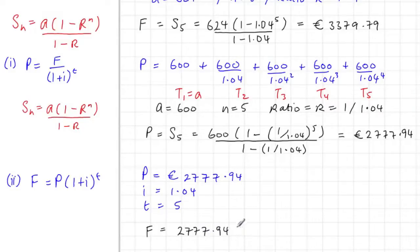So this is the simpler of the three questions. Substituting the numbers into the formula, and we see yes, the answer is 3379.79, the same answer as part 1. So the present value and the future values make sense.